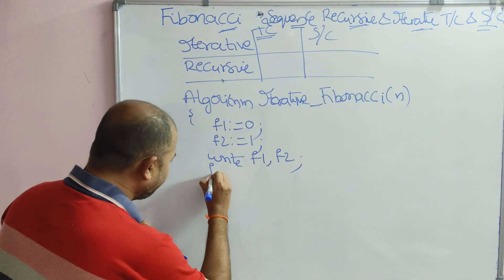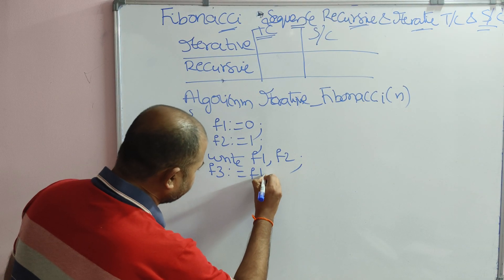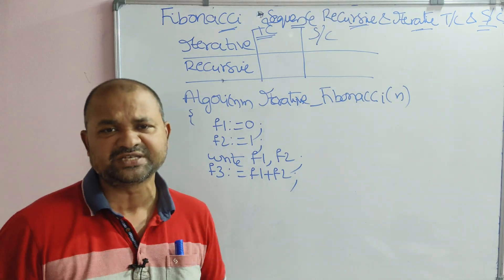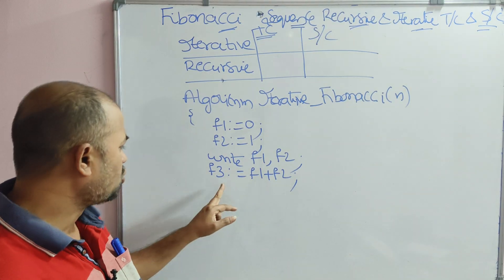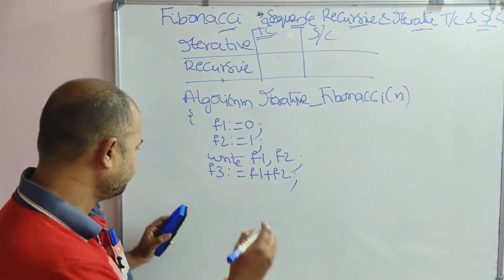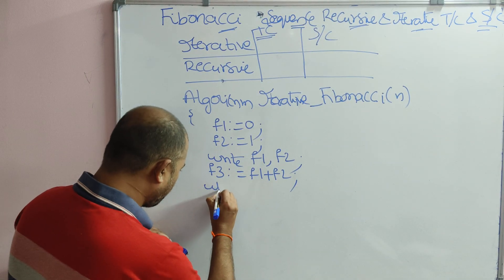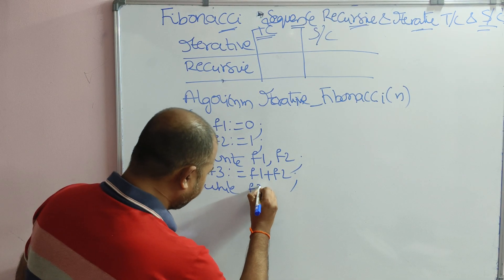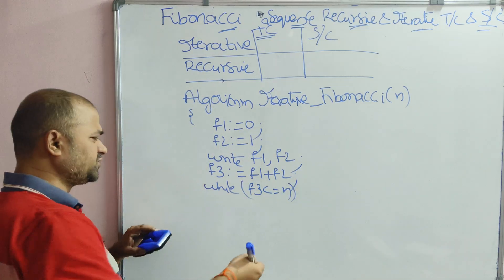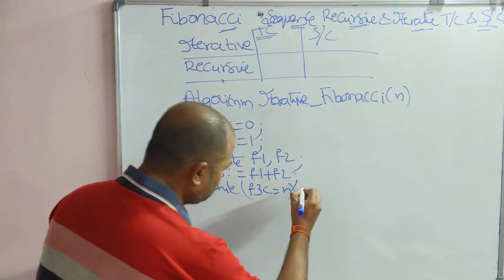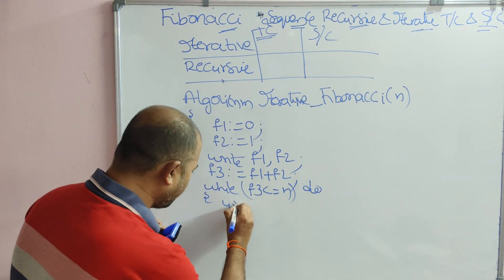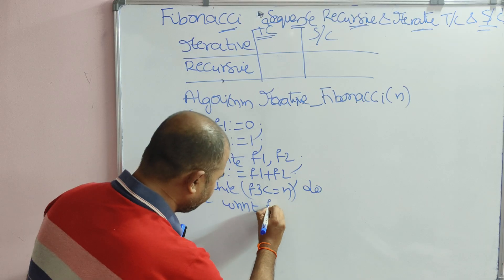Next, calculate the F3 value. F3 is equal to F1 plus F2. In algorithm writing, we use pseudo-notations, so we use colon-equals for assignment. Next, the while loop: while F3 is less than or equal to n, enclose the body within curly braces. Write F3 — print F3.